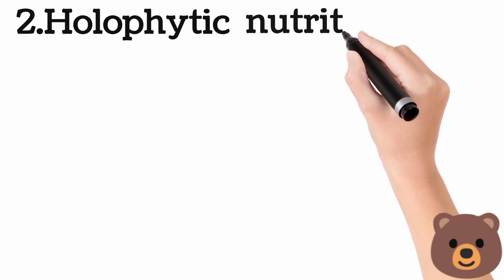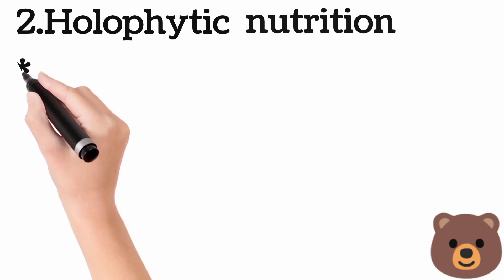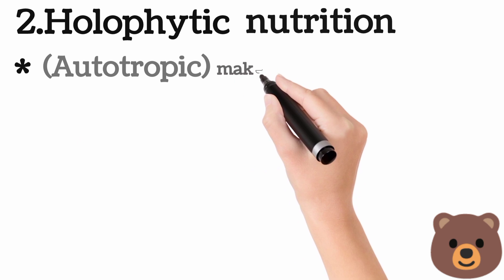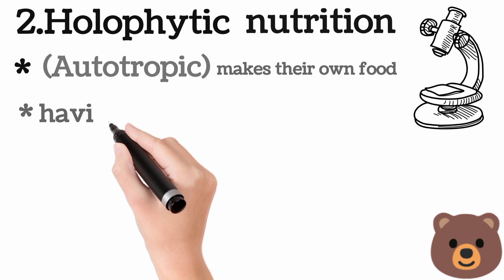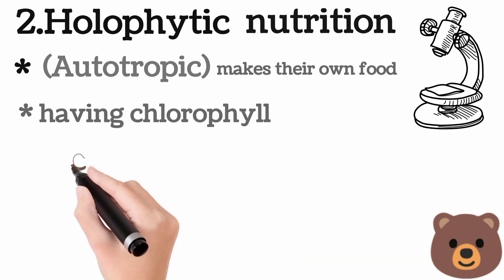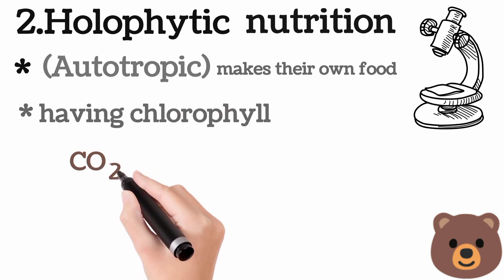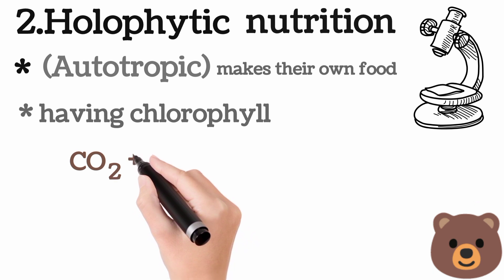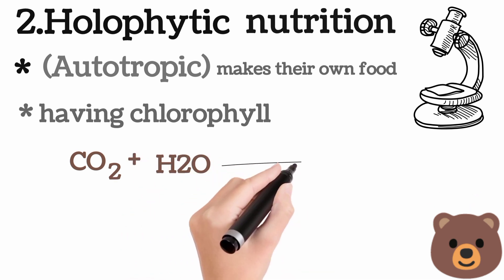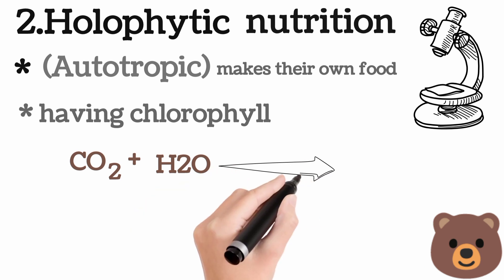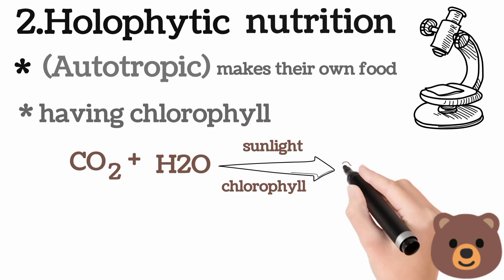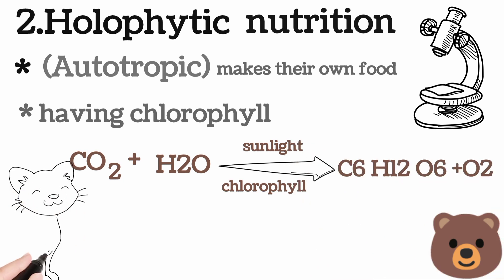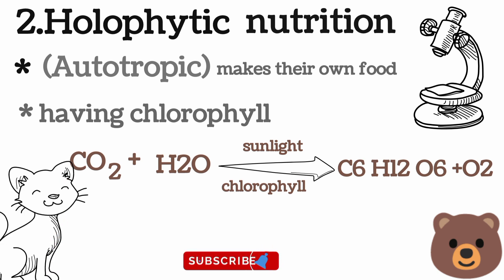Holophytic nutrition means autotrophic nutrition — the animal makes its own food due to having chlorophyll. So protozoa use carbon dioxide and water from the environment, and in the presence of sunlight and chlorophyll, convert them into carbohydrates, glucose, oxygen, and energy.